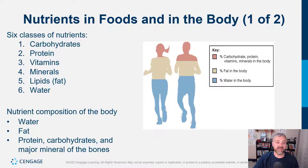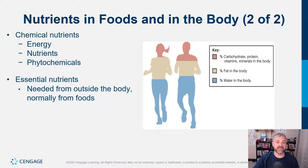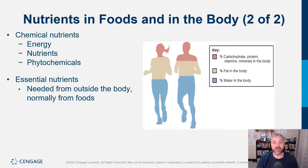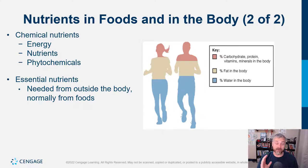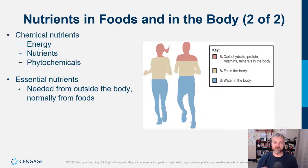Some of these nutrients are going to actually provide energy — those are your macronutrients: carbohydrates, fats, and proteins. They have caloric value, whereas water, vitamins, and minerals do not. There are no calories in a vitamin or mineral. It doesn't mean they're not super important, but they don't directly provide energy. The term 'essential' is one you'll see throughout the course. When something is essential, it means you have to eat it because your body can't make it or can't make enough of it.